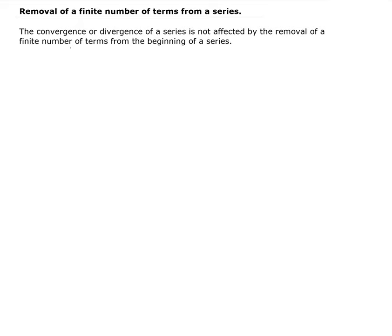For example, let's say you have a series — call it S — with terms a1, a2, a3, a4, and so on. Assume that this is converging to l. If you remove the first few terms, say you remove these three, then S will still converge. It will converge to something different from l, but it will still converge.